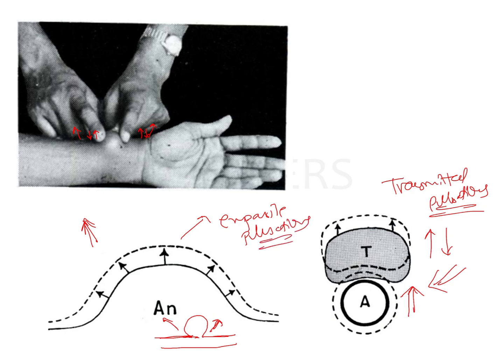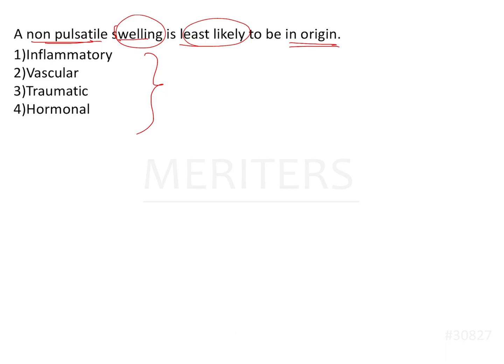So if there is pulsation associated with a swelling, it is because either it arises from an artery, it is lying very close to an artery, or the swelling itself is a vascular one. So if it is a non-pulsatile swelling, it is likely not vascular in origin. A non-pulsatile swelling is least likely to be vascular in origin, because if the swelling is vascular it is going to have some amount of pulsation — either transmitted or expansile.